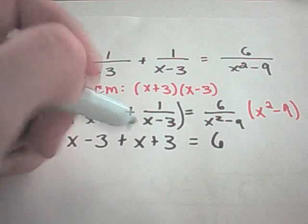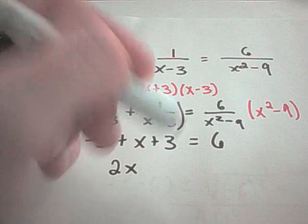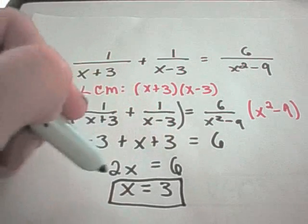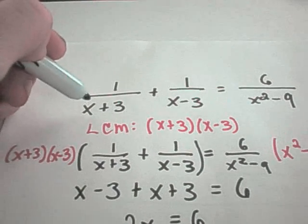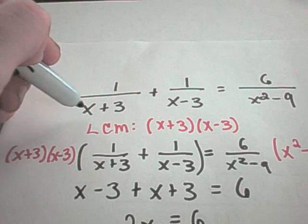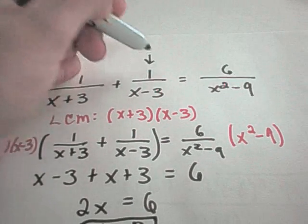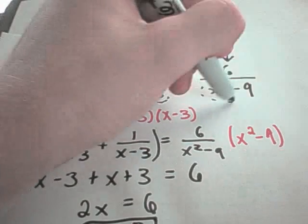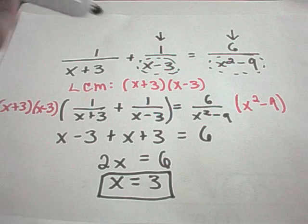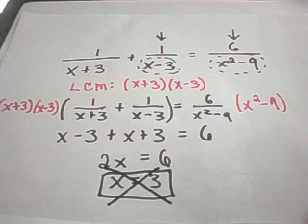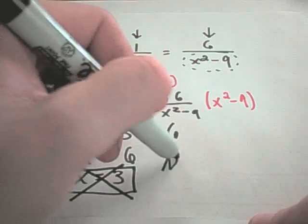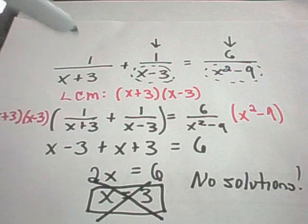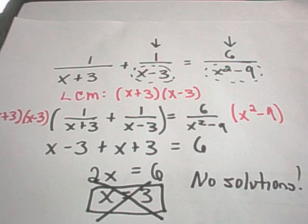Adding x plus x gives 2x, so 2x equals 6, and dividing both sides by 2 gives x equals 3. But checking the solution: plugging 3 into x minus 3 gives 0 in the denominator, and the same for x squared minus 9. This gives 0 in the denominator in two places — these are called extraneous solutions. So the original equation actually has no solutions.